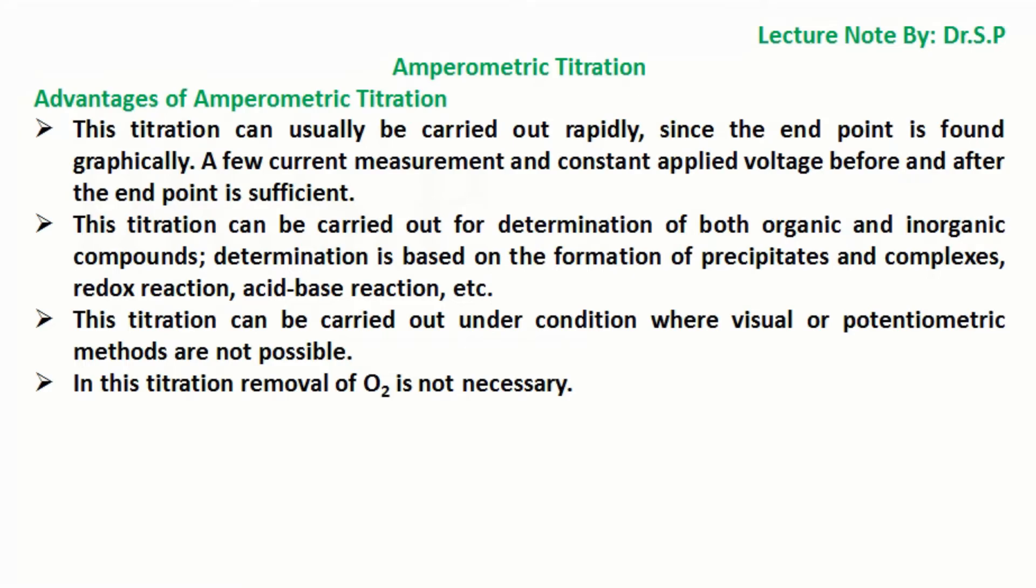Advantages of amperometric titration: This titration can usually be carried out rapidly, since the end point is found graphically. A few current measurements and constant applied voltage before and after the end point is sufficient. This titration can be carried out for determination of both organic and inorganic compounds. Determination is based on the formation of precipitates and complexes, redox reaction, acid base reaction, etc. This titration can be carried out under conditions where visual or potentiometric methods are not possible.